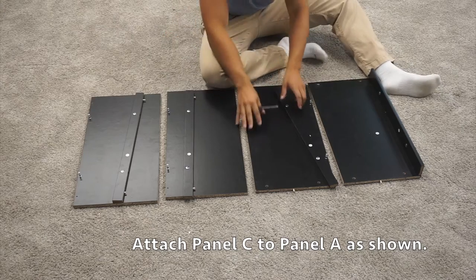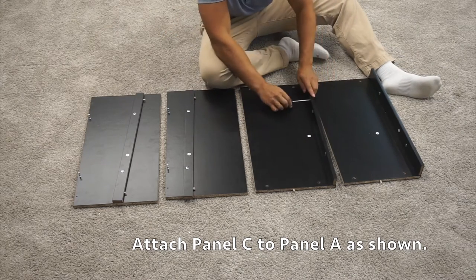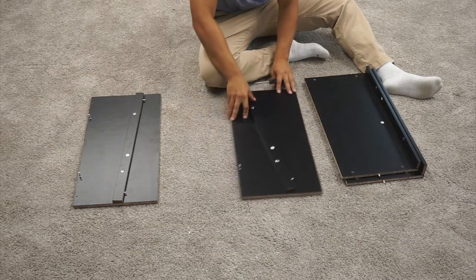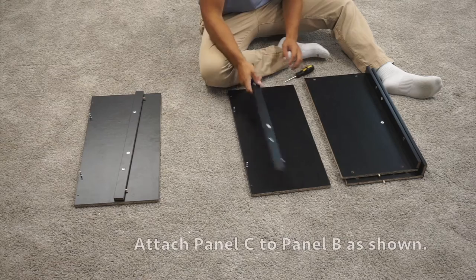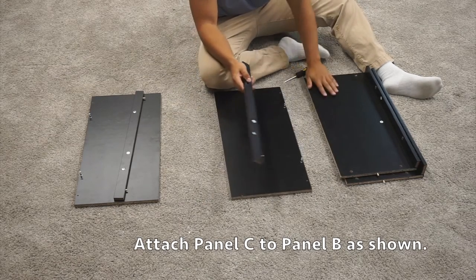Next, take your other A panel and attach a C panel to it. And then take your two B panels and attach them just the same as you did the A panels.